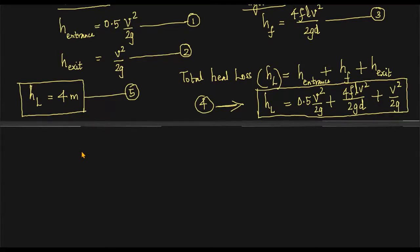So HL is equal to 0.5 V square over 2G plus 4FLV square by 2GD plus V square by 2G, and the sum of these three is equal to four meters. This is the idea. Four meters, very important. Now what is velocity V, you will find out.